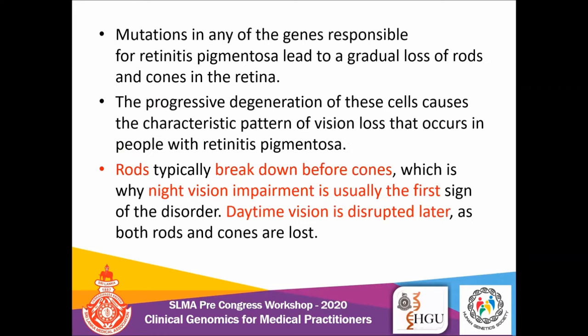Regarding pathophysiology, gene mutations in retinitis pigmentosa directly target the rod and cone cells of the retina. Rod cells are responsible for night vision and cones for daytime vision. Initially in retinitis pigmentosa, the rod cells are affected first, so patients lose their night vision first. Then cone cells are progressively affected, and the patient gradually loses daytime vision as well, ultimately leading to blindness.